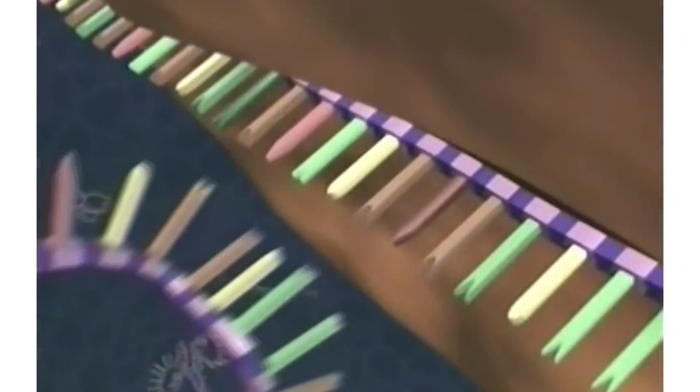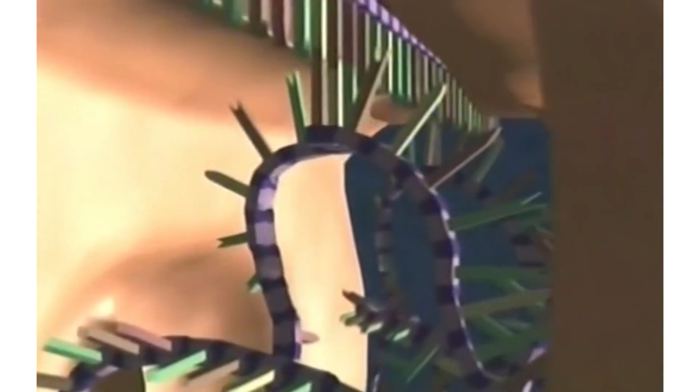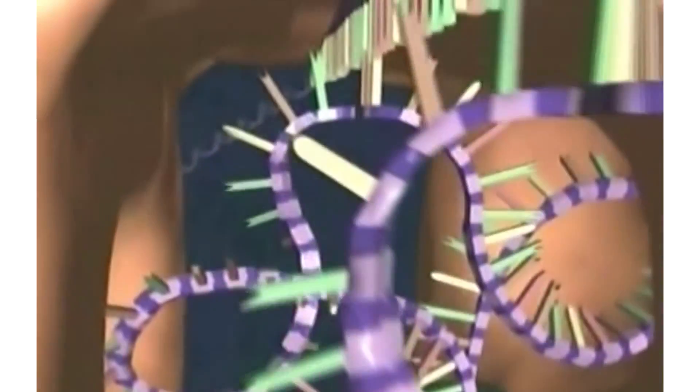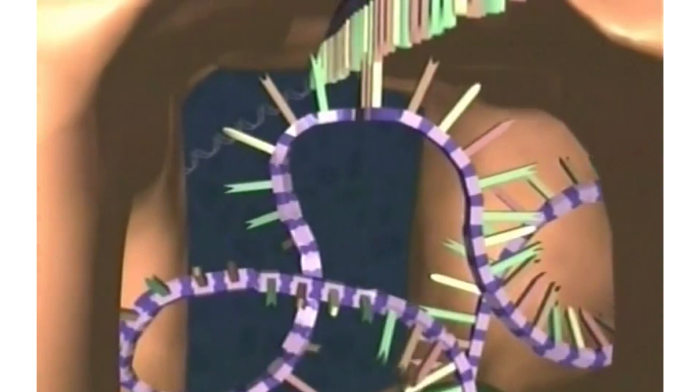You see, cell life requires DNA, RNA, and proteins in a complex interlocking system, in which each biomolecule depends on the other two to both exist and function. And since each type of biomolecule also contains complex encoded information, then intelligent input is the only logical source for their existence, not random chance processes.